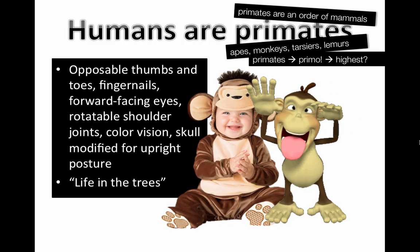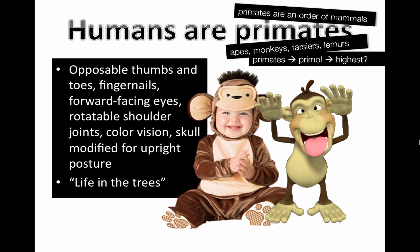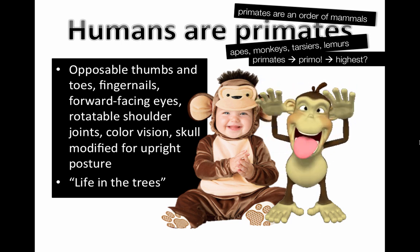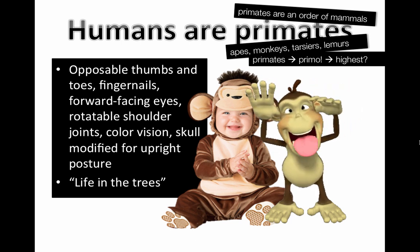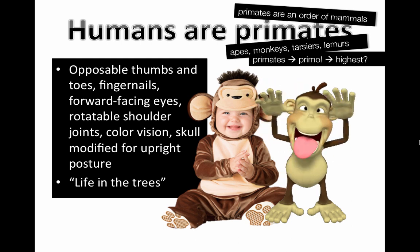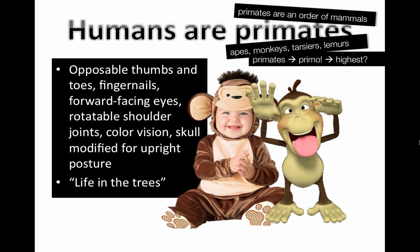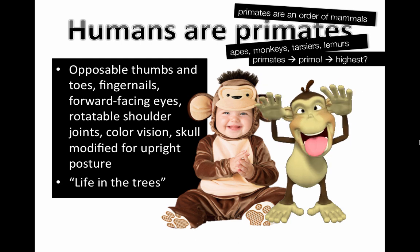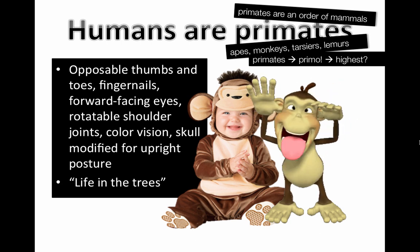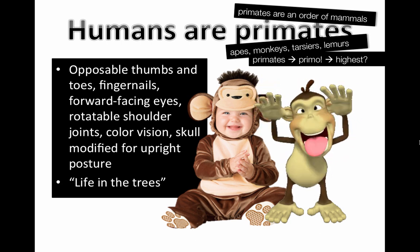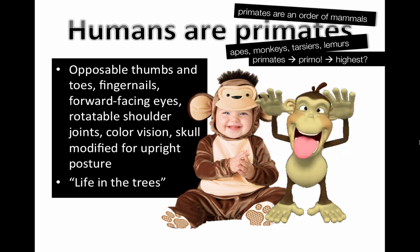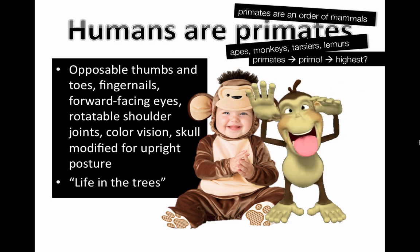Humans are primates, and primates are an order of mammals. You remember the levels of classification using the mnemonic King Philip Came Over For Good Spaghetti — Kingdom, Phylum, Class, Order, Family, Genus, Species. So humans are primates, which fit into that order of mammals.